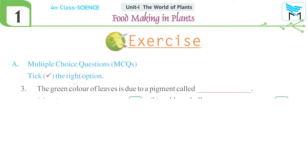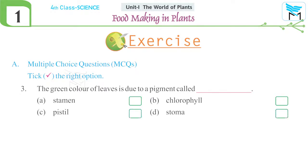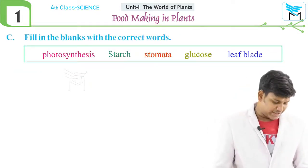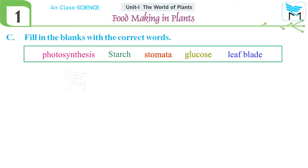Next question: the green color of leaves is due to a pigment called blank — options: a) stamen, b) chlorophyll, c) pistil, d) stoma. The correct answer is option b, chlorophyll. Next question: an example of a non-green plant is — options: a) cactus, b) mold, c) croton, d) all of these. The correct answer is option c, croton.